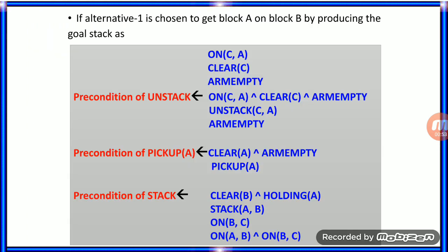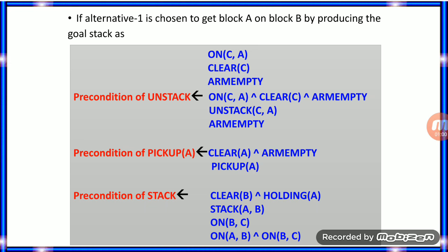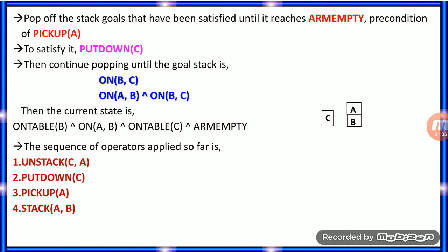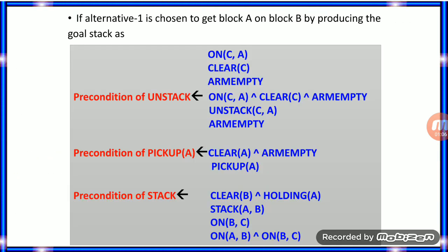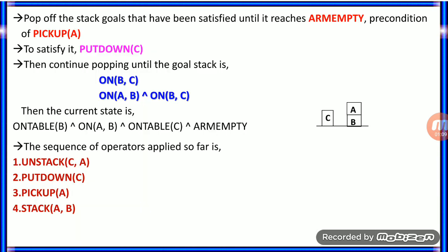Choosing the first alternative — to get block A on block B — the goal stack is produced. This includes the precondition of unstack, precondition of pickup, and precondition of stack. To achieve arm empty, you need the precondition pickup(A) to be satisfied.